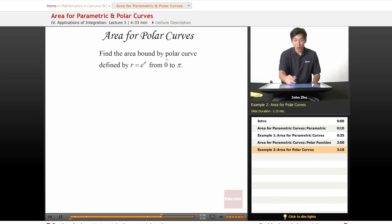If we want to find the area bound by a polar curve defined by r equals e to the theta from 0 to pi,